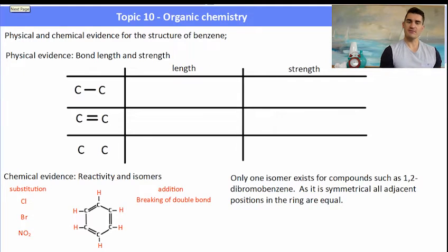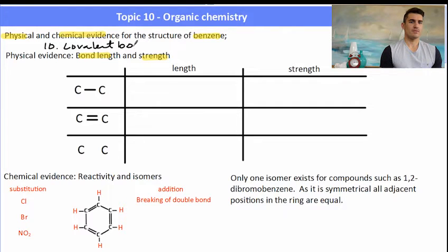So what is some of the physical and chemical evidence for the structure of benzene? Well, the physical evidence is the bond length and the bond strength. And both of the values for these can be found in the data book.